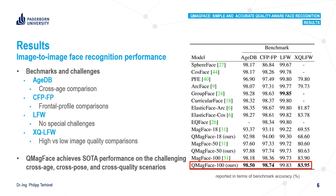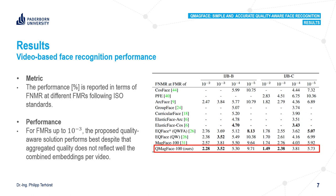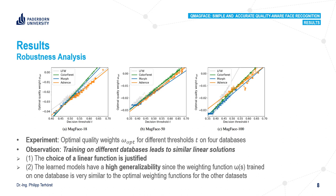This leads to quite strong results. For the image-to-image face recognition performance, we can see on these benchmarks that QMACFACE achieves state-of-the-art performance on the challenging cross-age, cross-pose, and cross-quality scenarios. Also for image-based recognition, it performs quite well for false match rates up to 10 to the power of minus 3, for example.